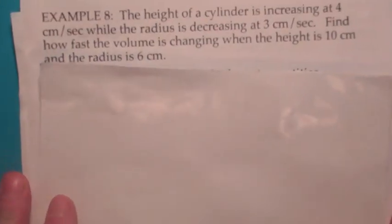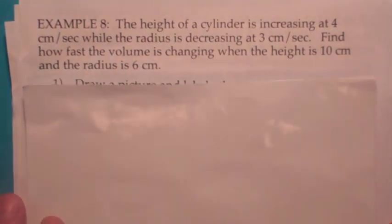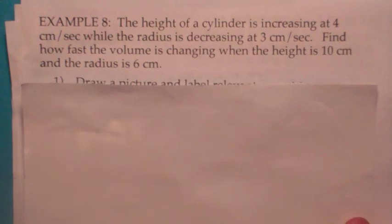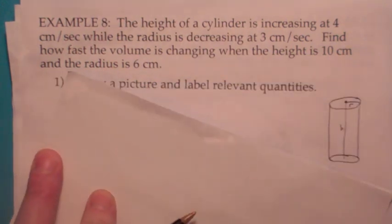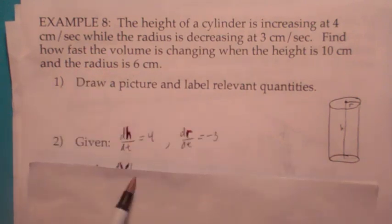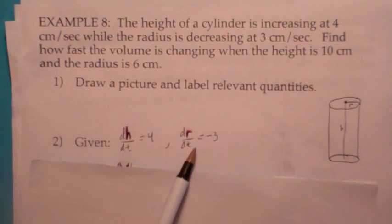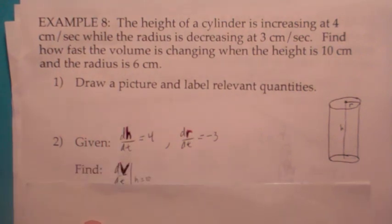In this one, we have the height of a cylinder that's increasing at 4 centimeters per second, while the radius is decreasing at 3 centimeters per second. Question is, how fast is the volume changing when the height is 10 and the radius is 6 centimeters? So the picture looks kind of like this. They're giving us that dh dt is 4 centimeters per second, dr dt is negative 3 centimeters per second, and they want us to find dv dt when h is 10 and r is 6.